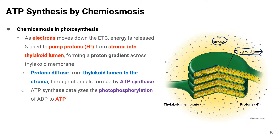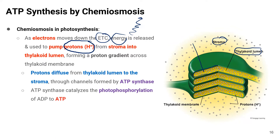During the light-dependent reaction, electrons move down through the electron transport chain, either through non-cyclic or cyclic electron transport. As the electrons move down the electron transport chain, energy is released. This energy is used to pump protons from the stroma into the thylakoid lumen.